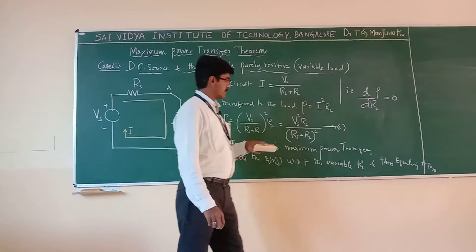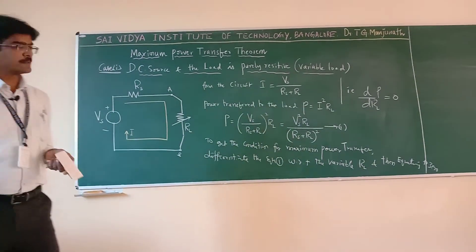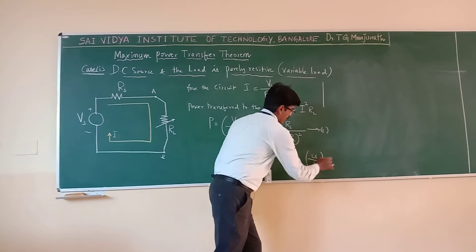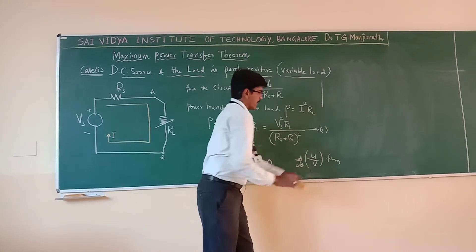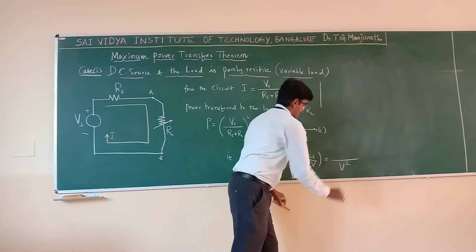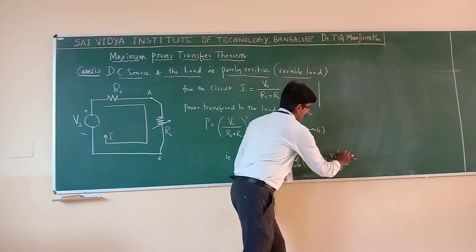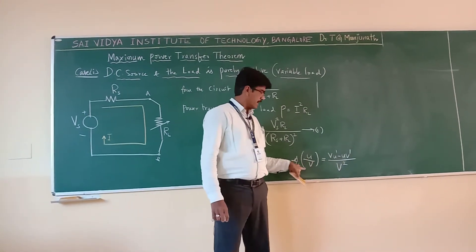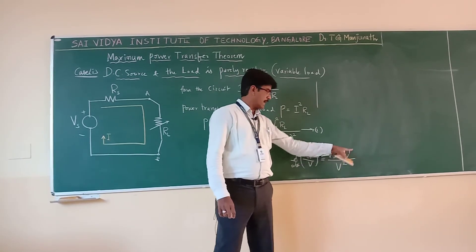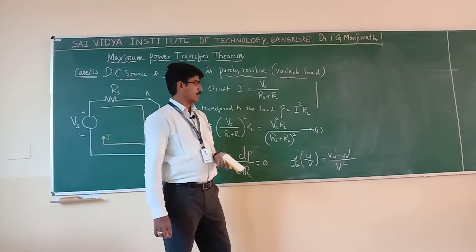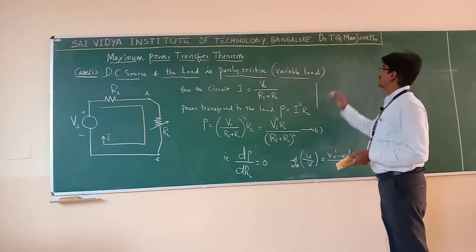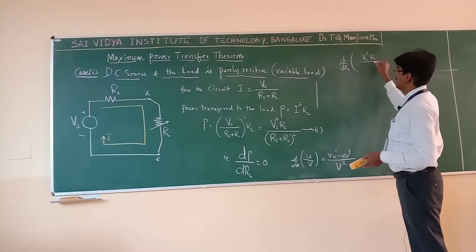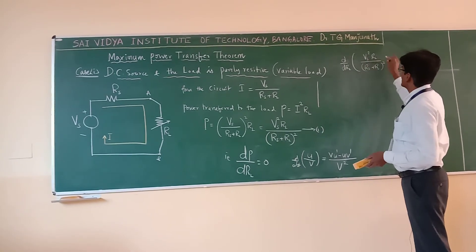We differentiate P = V_S² × R_L / (R_S + R_L)² with respect to R_L. This is of the U/V form, so we apply the quotient rule: d/dR_L [U/V] = (V·U' − U·V') / V². Here U = R_L and V = (R_S + R_L)². Differentiating: V² × [(R_S + R_L)² × 1 − R_L × 2(R_S + R_L)] = 0.